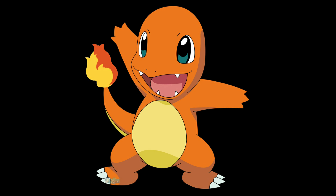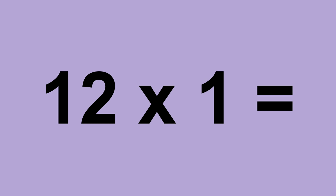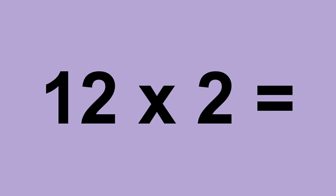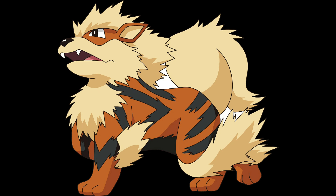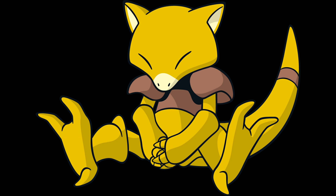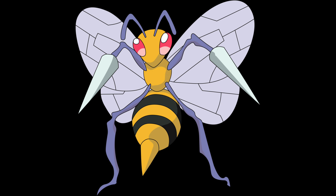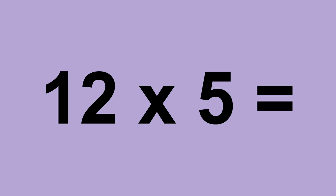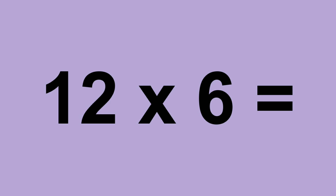Twelve times zero equals zero. Twelve times one equals twelve. Twelve times two equals twenty-four. Twelve times three equals thirty-six. Twelve times four equals forty-eight. Twelve times five equals sixty. Twelve times six equals seventy-two.